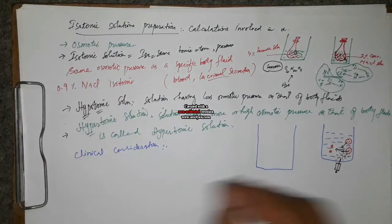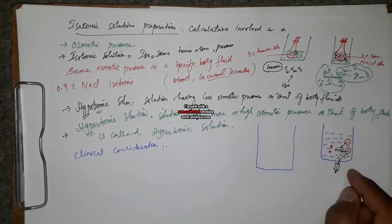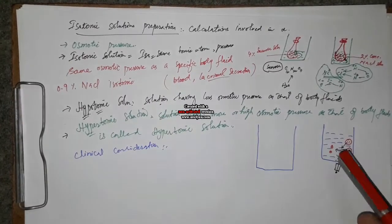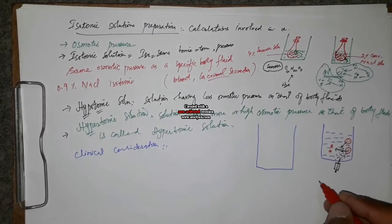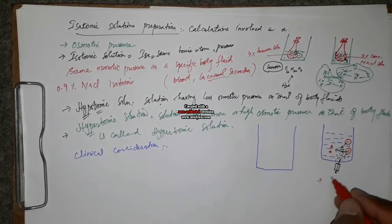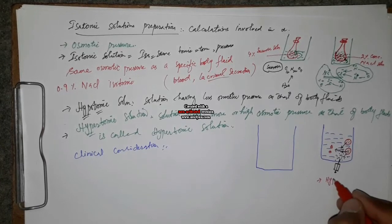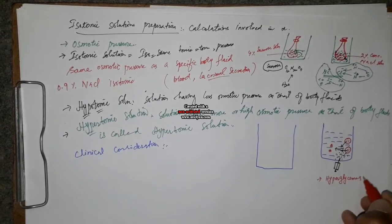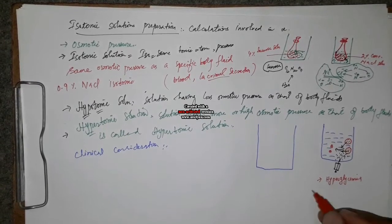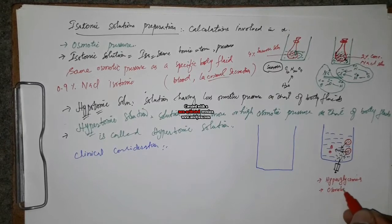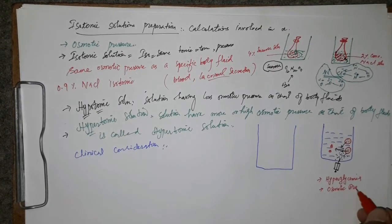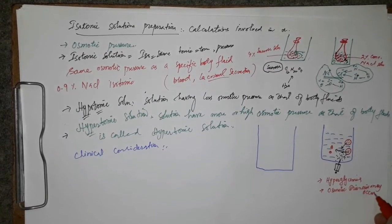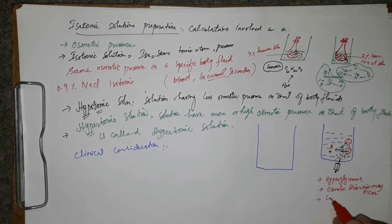The hypertonic solution will squeeze fluids out of the RBCs, because solvent moves from lower concentration to higher concentration until both concentrations become equalized. As a result, these RBCs will shrink or crenulate — this is called crenulation. Clinically, if this is a dextrose solution, the patient may become hyperglycemic; osmotic diuresis may occur, and loss of electrolytes may occur.